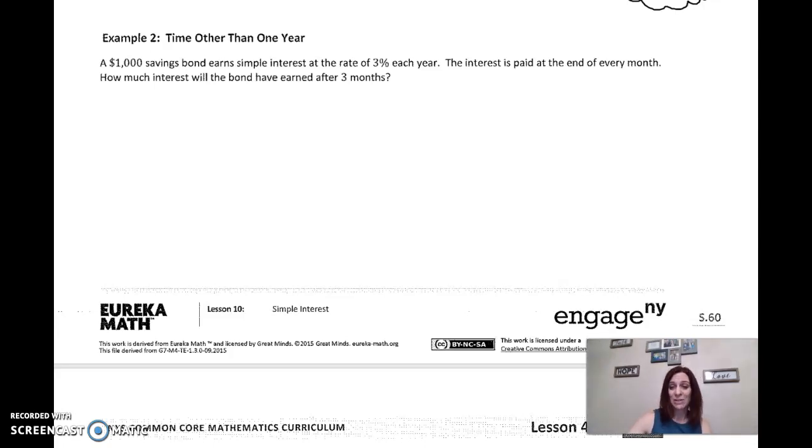All right. So here we go. It's a $1,000 savings bond. That's our principal. Our rate is 3%, which we change to a decimal. So my decimal point comes after the three. I move it two places to the right and drop the percent sign. So that becomes 0.03. And the interest is paid every month. How much interest will you earn after three months? Well, our time then has to be out of years because this is a yearly interest rate. See how it says each year? So how many months are in a year? 12. So we have 3 out of the 12 months.